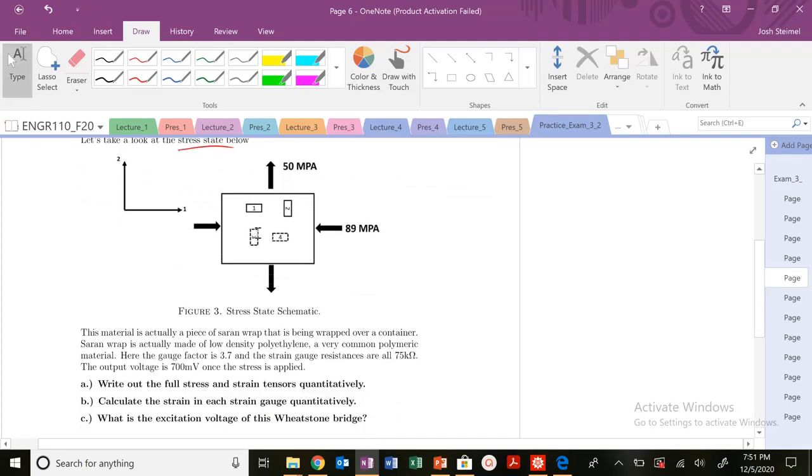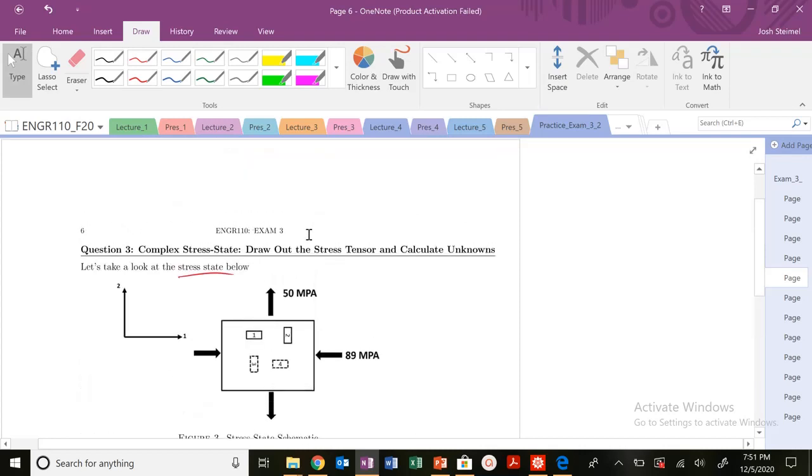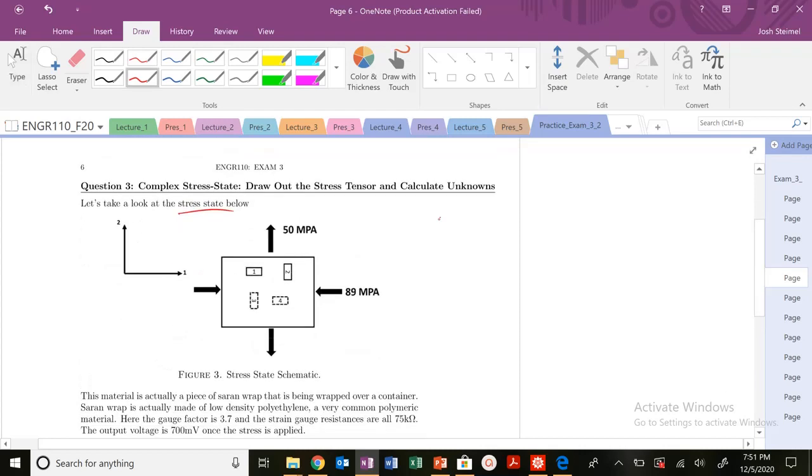So we have this compressive stress and this tensile stress. If I want to draw out my stress tensor, the stress tensor is going to be in the 1-1 direction, minus 89, 10 to the 6 pascals.